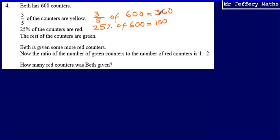We're then told that the rest are green. And so that means that we've got how many that are green? 360 plus 150, that's going to give us 510, which means that there are 90 green counters.